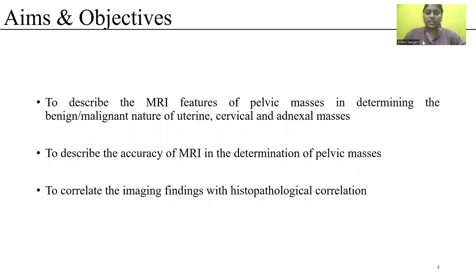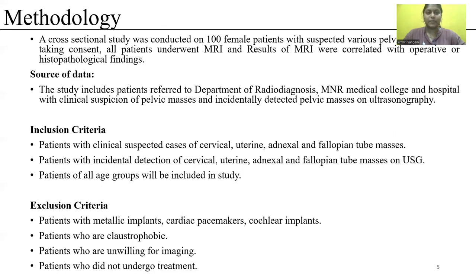The aims and objectives of the study are: to describe the MRI features of pelvic masses in determining the benign and malignant nature of uterine, cervical, and adnexal masses; to describe the accuracy of MRI in determination of pelvic masses; and to correlate the imaging findings with histopathological findings.